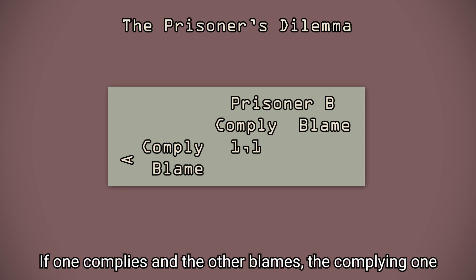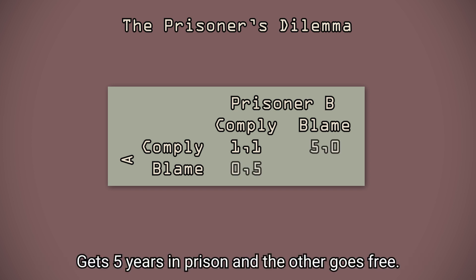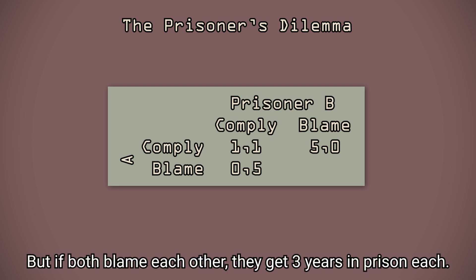If one complies and the other blames, the complying one gets five years in prison and the other gets three. But if both blame each other, they get three years in prison each.